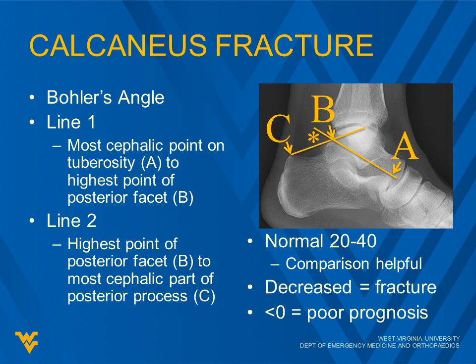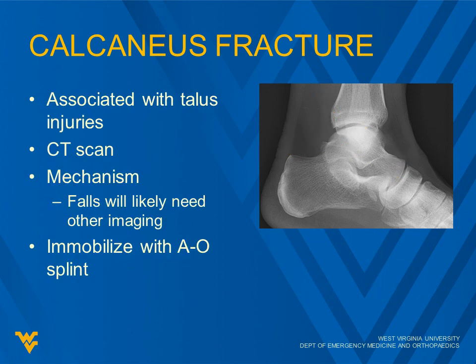The lower the number, the worse the prognosis — and less than zero is obviously much worse. Calcaneus fracture is also associated with talus injuries, so a CT scan is often needed to rule out talus injuries. The mechanism many times will be a fall from height, and the patient will likely need other imaging such as imaging of the spine.